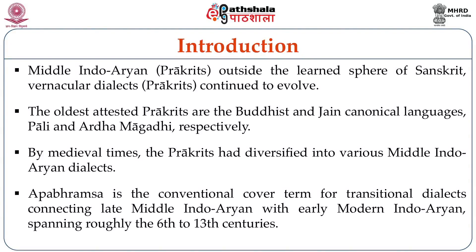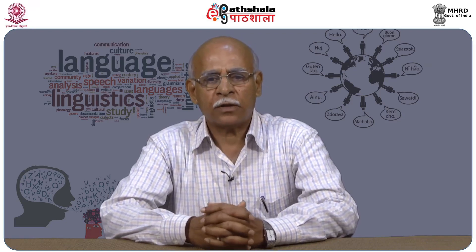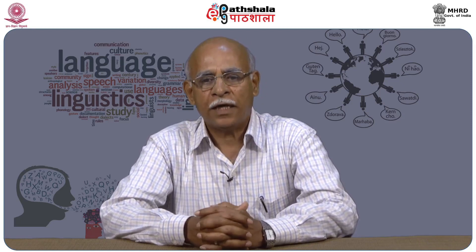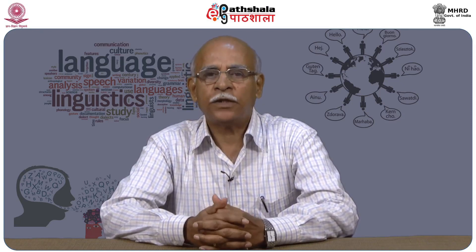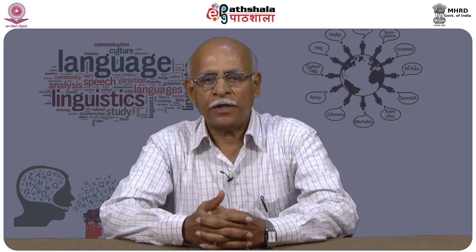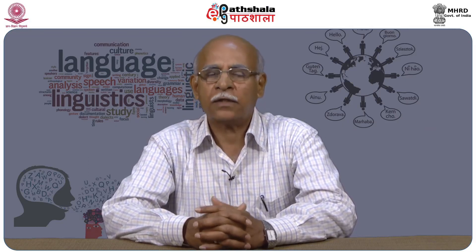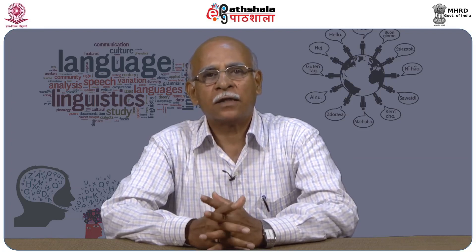Interestingly though, there are some literary creations in Upper Brahmsha as well, belonging to the 6th century CE. An inscription of King Dharasena II of Valabhi in Upper Brahmsha is used, in which the king praises his father as being adept in Sanskrit, Prakrta, and Upper Brahmsha compositions. That shows that the three were treated as different from each other.